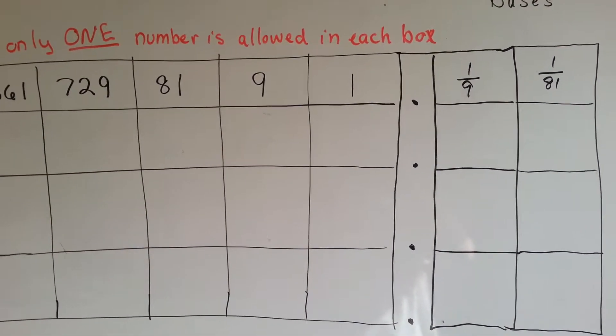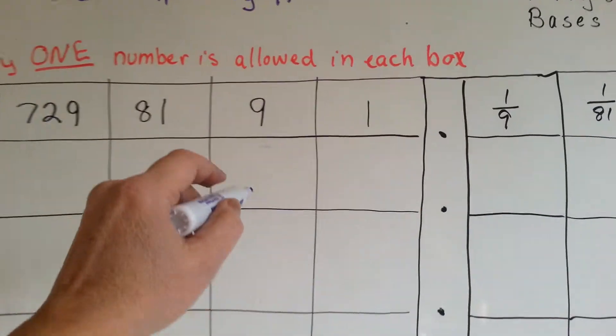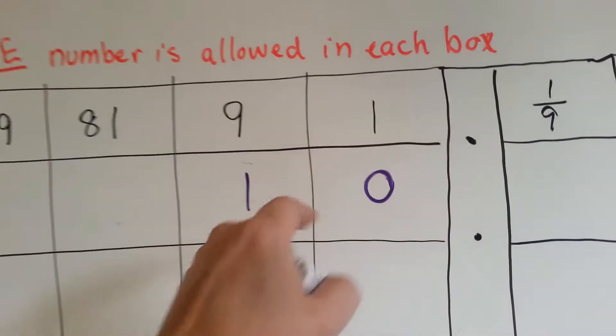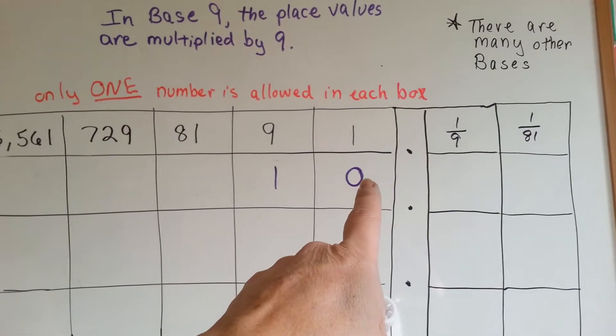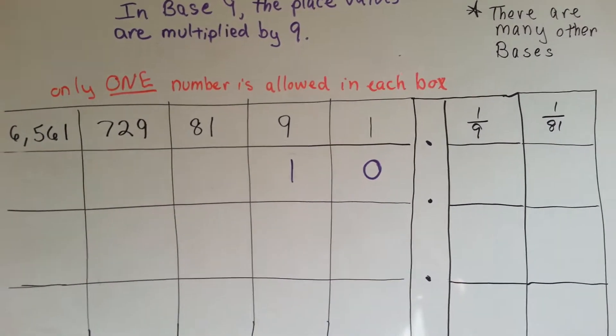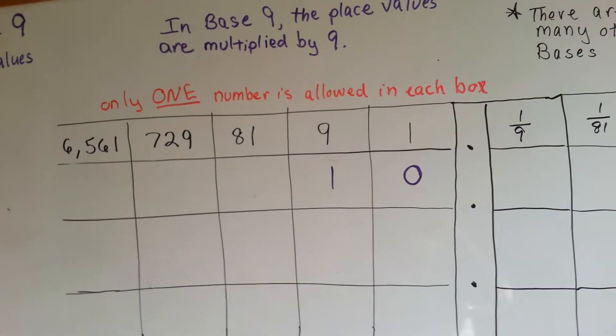If you wanted to say the number 9 in base 9, you'd write it like this because that means you have one 9 and zero 1s. See that? A lot different than base 10, isn't it?